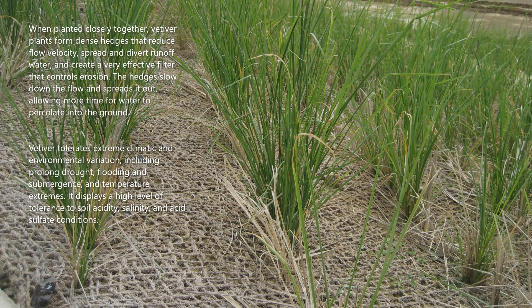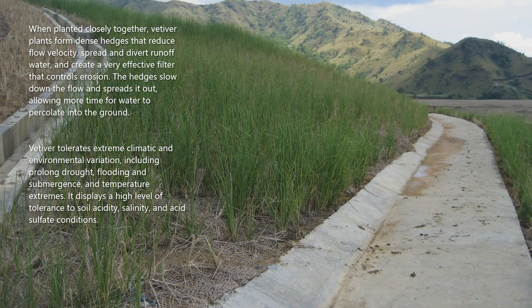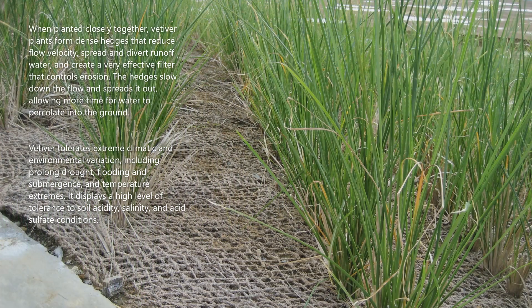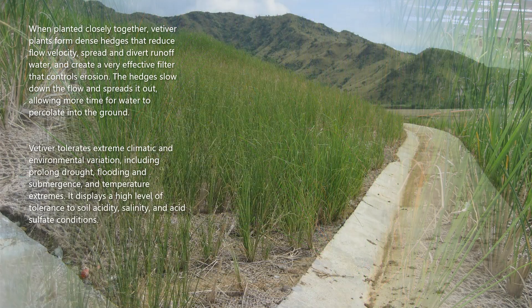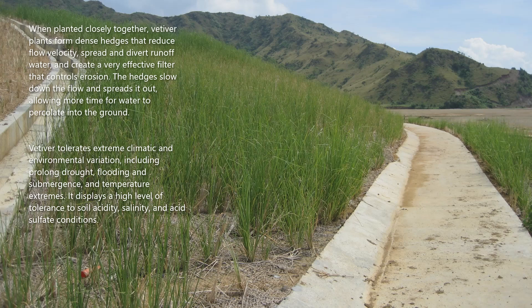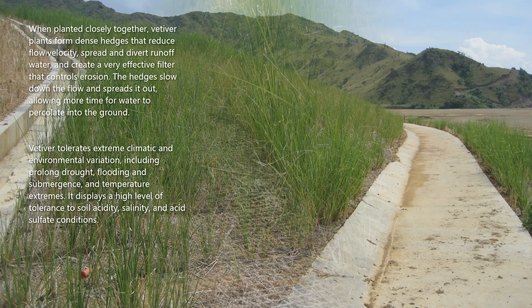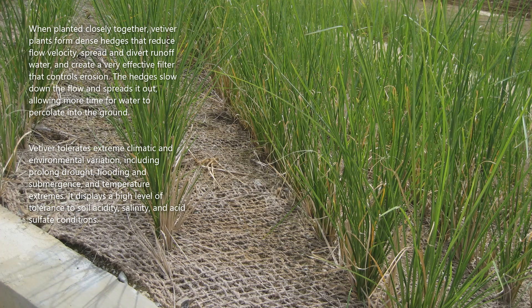When planted closely together, vetiver plants form dense hedges that reduce flow velocity, spread and divert runoff water, and create a very effective filter that controls erosion. The hedges slow down the flow and spread it out, allowing more time for water to percolate into the ground. Vetiver tolerates extreme climatic and environmental variation, including prolonged drought, flooding and submergence, and temperature extremes.